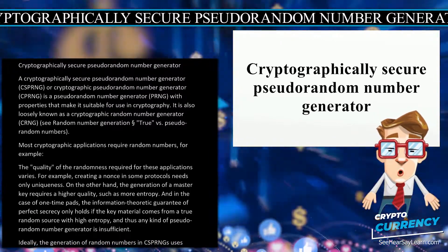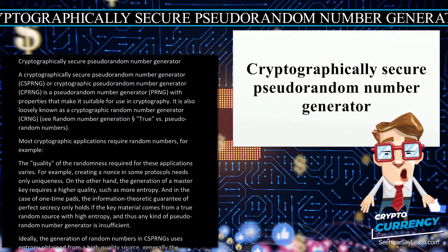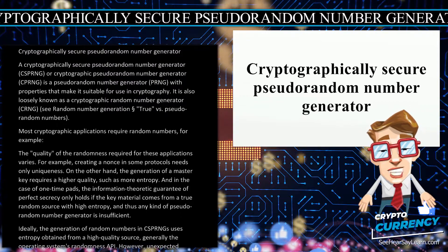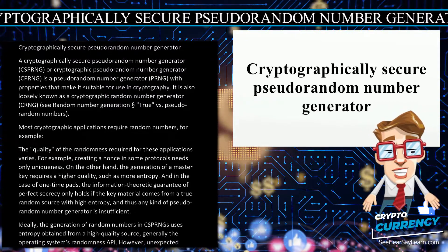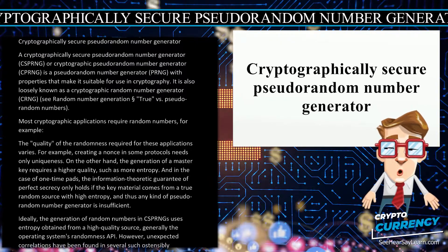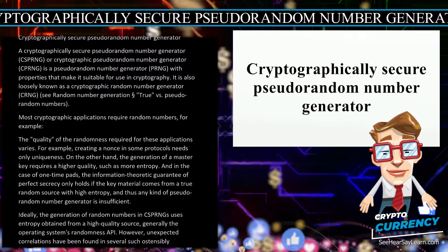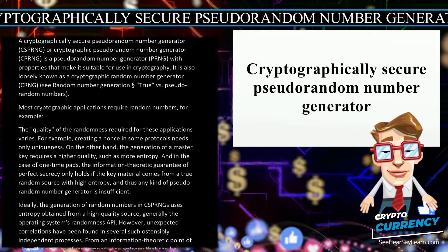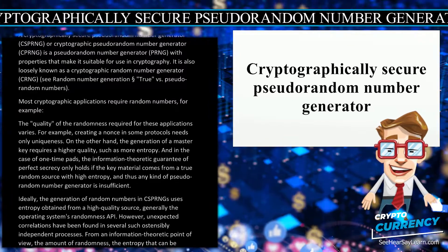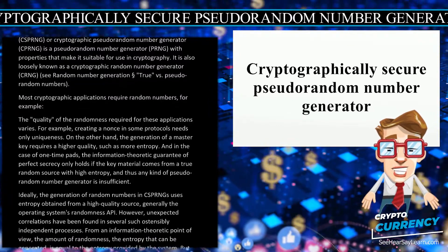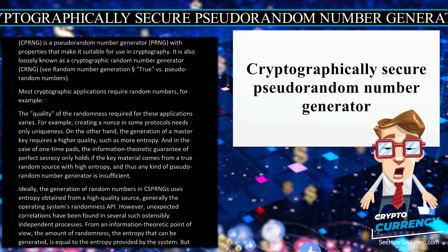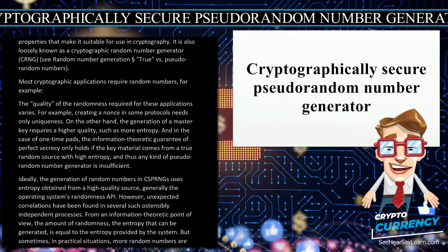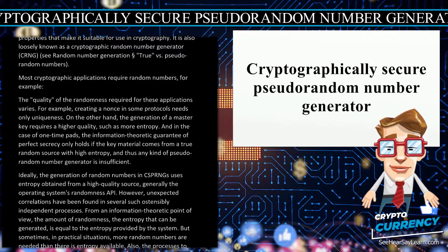Most cryptographic applications require random numbers. The quality of the randomness required varies. For example, creating a nonce in some protocols needs only uniqueness. On the other hand, the generation of a master key requires higher quality, such as more entropy. In the case of one-time pads, the information-theoretic guarantee of perfect secrecy only holds if the key material comes from a true random source with high entropy, and thus any kind of pseudo-random number generator is insufficient.